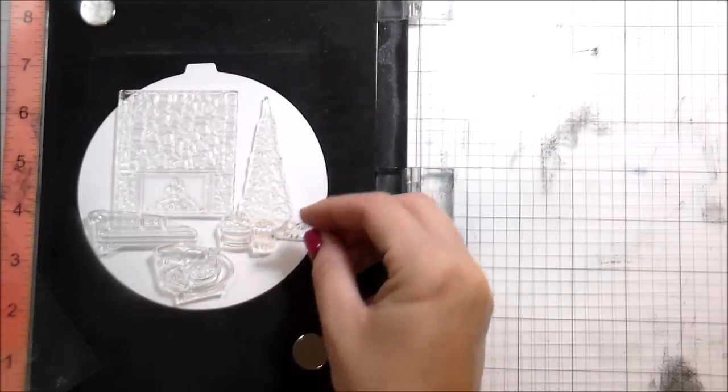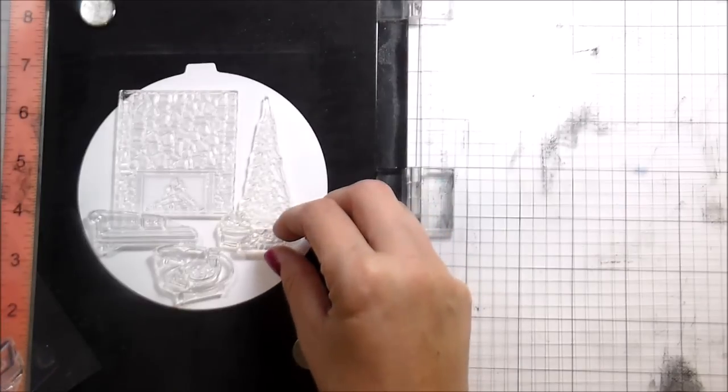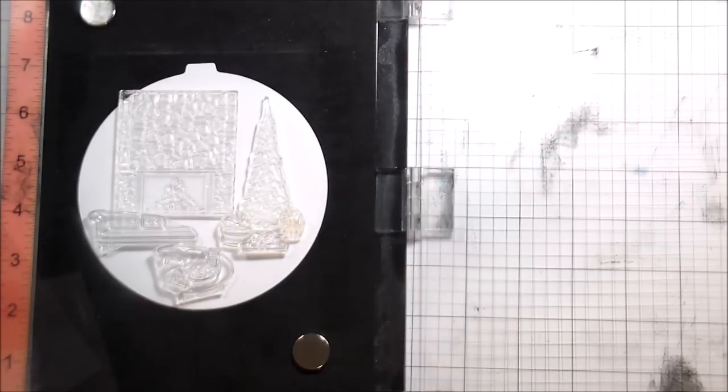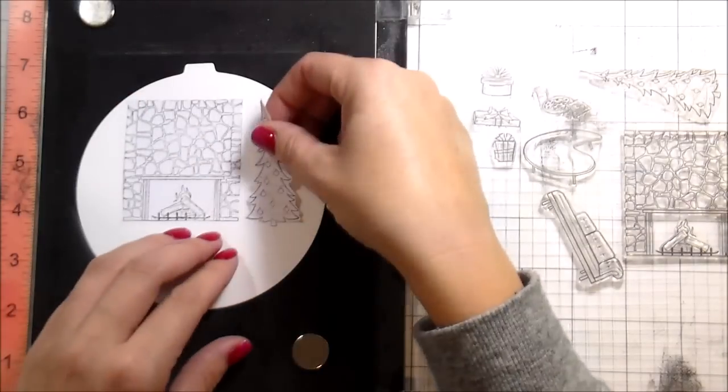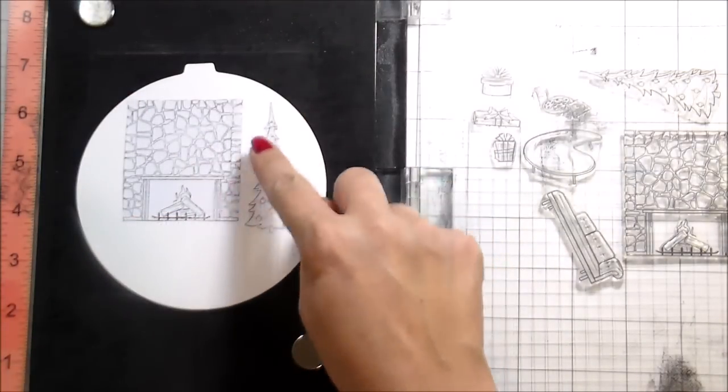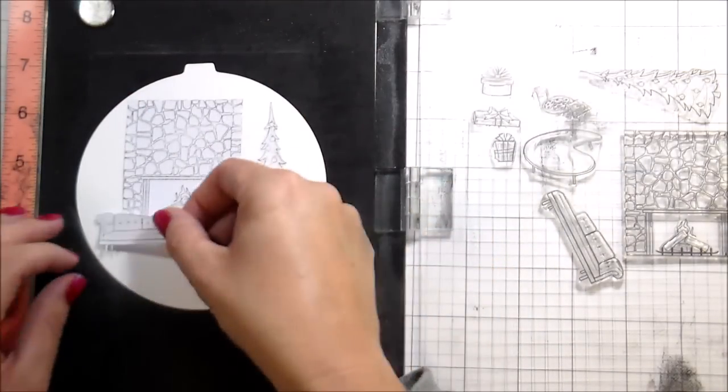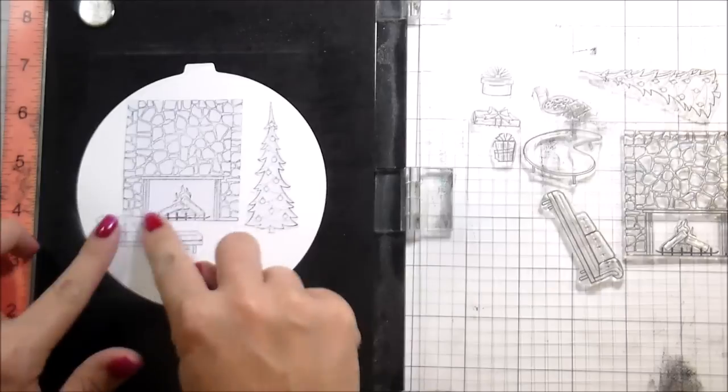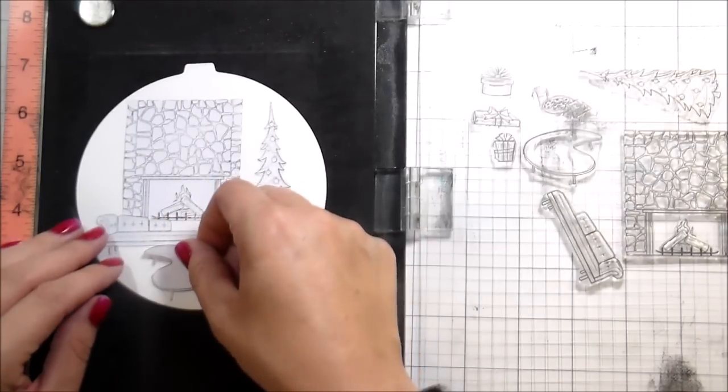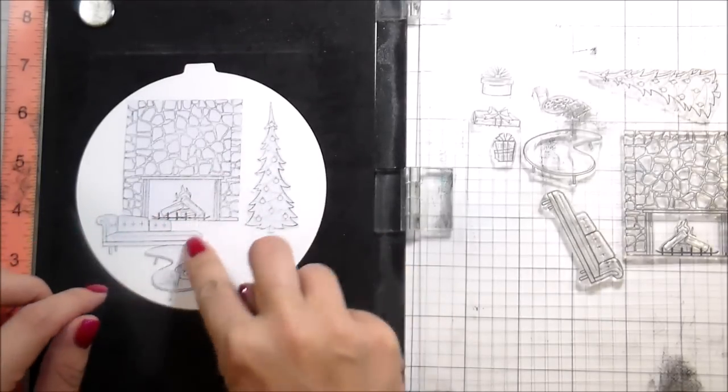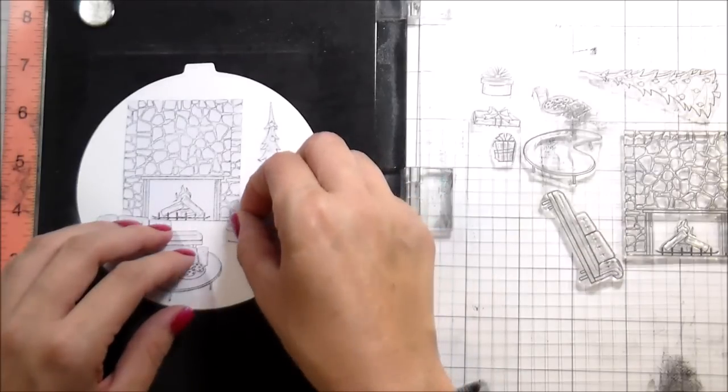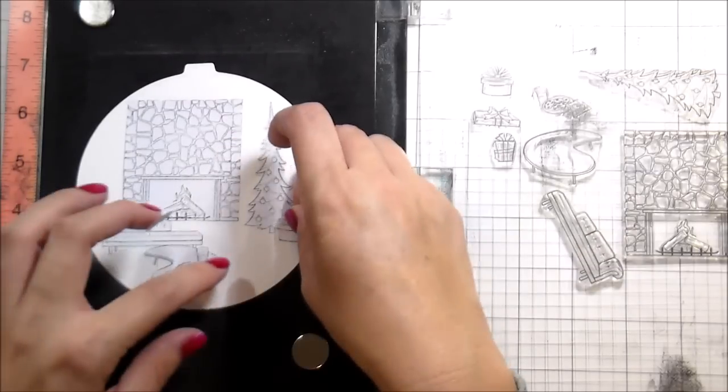Here I'm just laying out all of my stamps so I know how they're going to fit, and then all of the things that I'll need to cut masks for. Because I can't do a scene on an ornament and not make it one layer, right? Right.